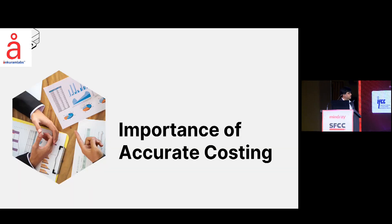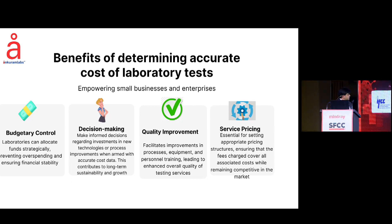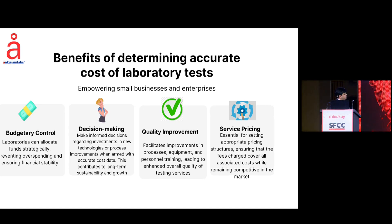So what is the importance of accurate costing? First, you have control over your budget. If you know the cost of a test, you can control the budget and allocate funds strategically. Then of course, decision making — you don't just make decisions, you make informed decisions because you know your cost. Then of course, quality improvement. And at last, you can decide the service price. Service price is just the cost of your test plus your margin of profit.